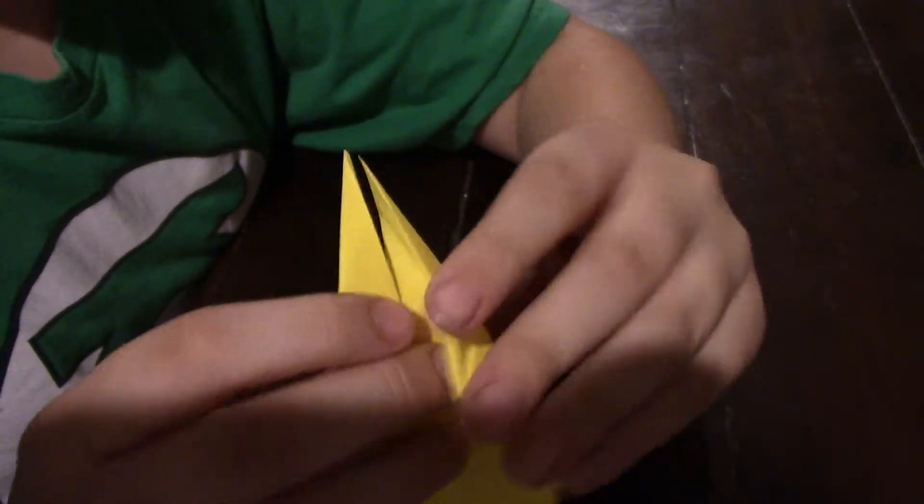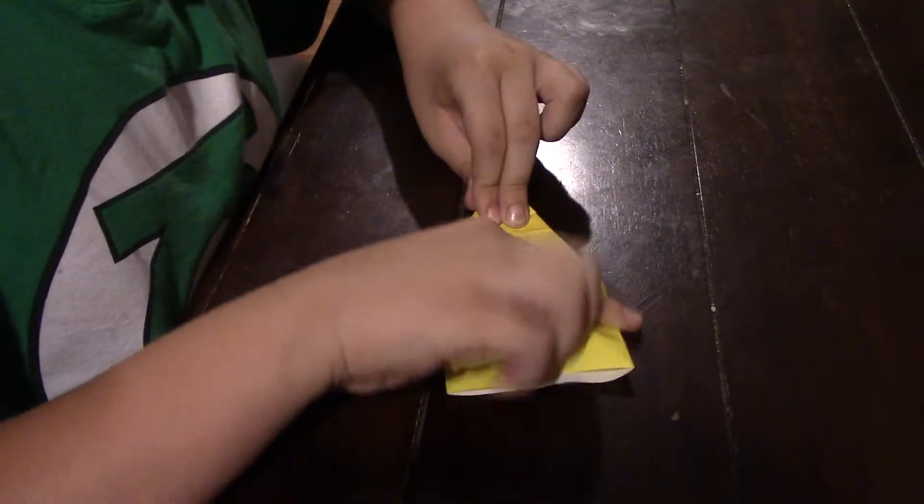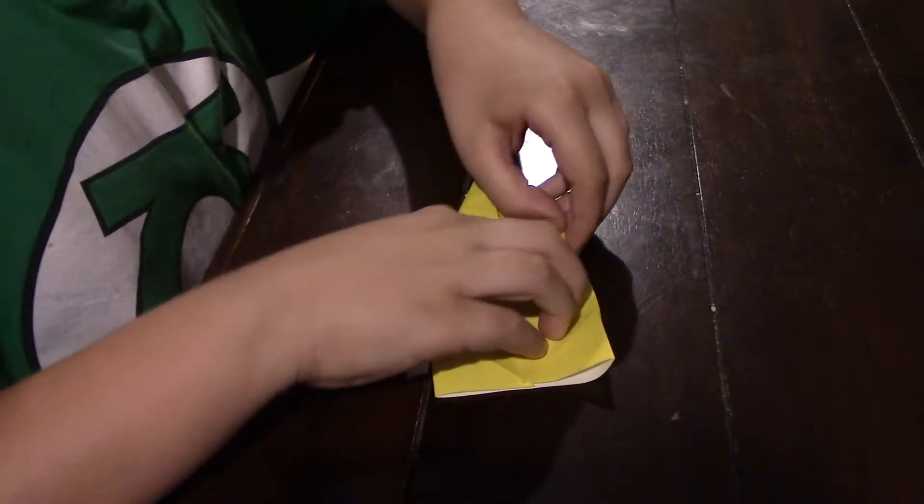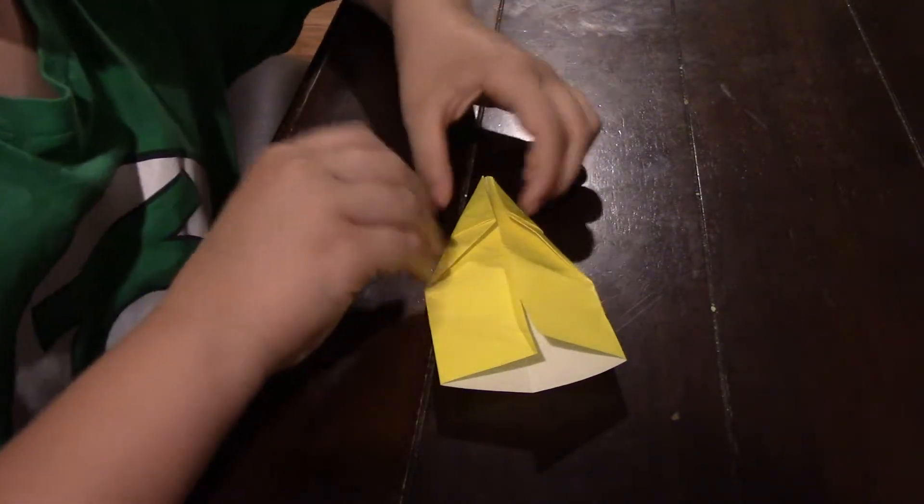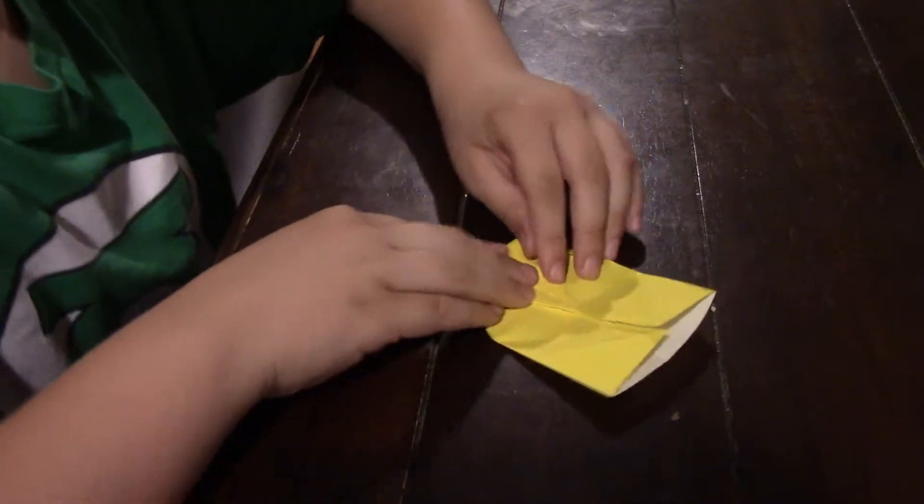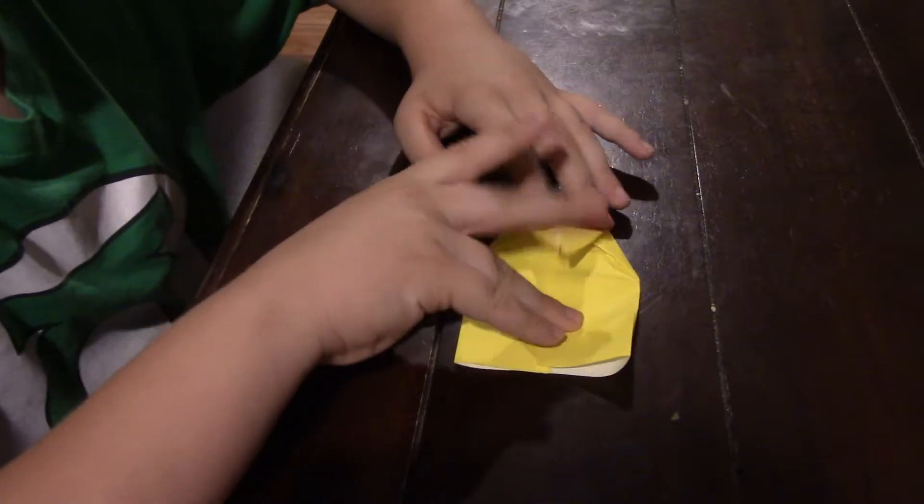And then do the same thing right here. You got it? Now you're going to take this and fold it into the center. I'm going to take it and fold it down like that. Then fold this back up right there and fold this tip down right there. You got that?